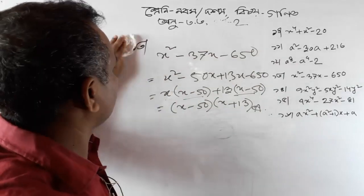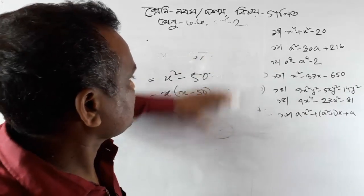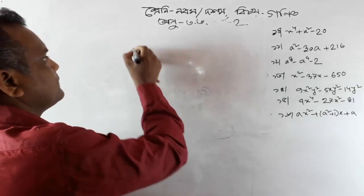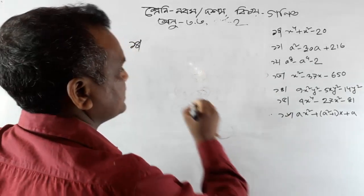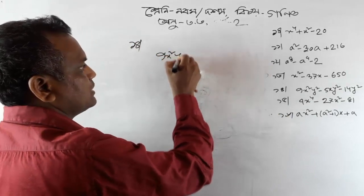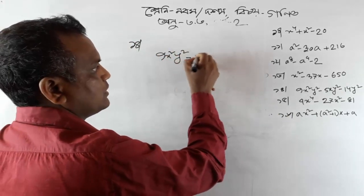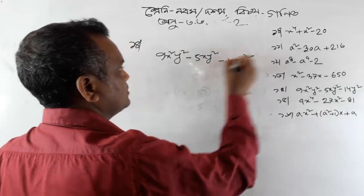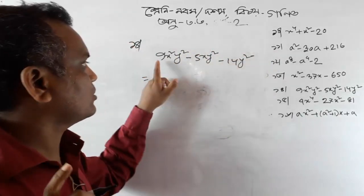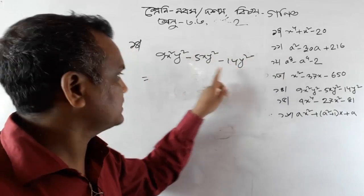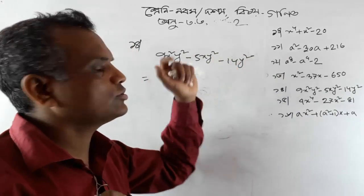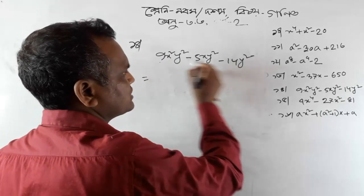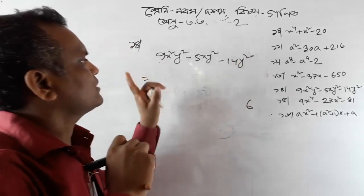Let's look at the numbers. What number is the number? 9x²y², 5xy², 4y². Let's look at number one. The number is 9x²y², 1x²y², 4x²y².